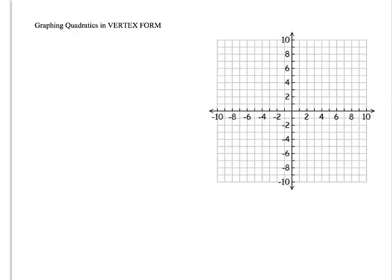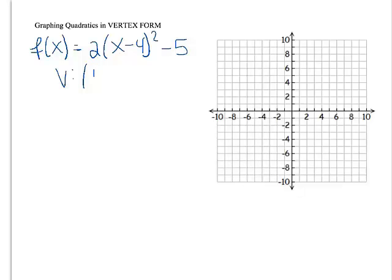Let's say I have f(x) equals 2 times the quantity x minus 4 squared minus 5. So right away, that vertex is h and k. So that's going to the right 4 and down 5. So that vertex is going to be at 4, negative 5 right here.